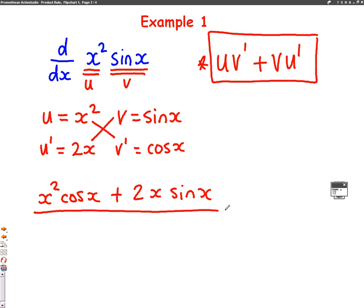If we recap, the way we did this is you use the product rule when we're differentiating two things times together. Call one of them u, one of them v. Differentiate these to find u dash and v dash. And then just plug it into the formula for the product rule, which is u v dash add v u dash.